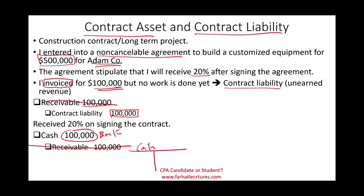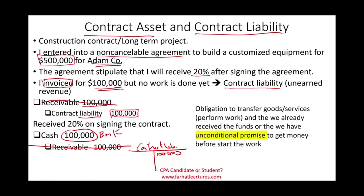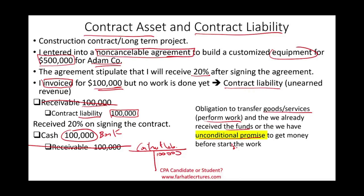Make a T-account for contract liability and put in $100,000 — it says right there 'contract liability,' so you know it's a liability. That contract liability represents work that needs to be performed. A contract liability is the obligation to transfer goods or services — to perform work — and we already received the funds, or we have an unconditional promise to receive the money before starting the work. That's why I emphasized 'non-cancelable agreement' — there is a promise that is unconditional, the agreement is signed and legally enforceable.